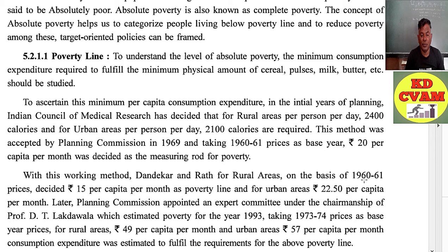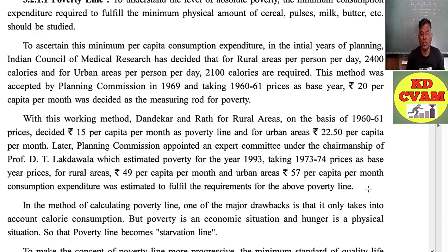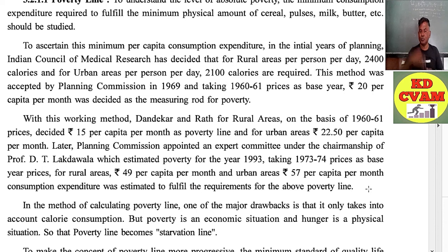Later, the Planning Commission appointed an expert committee under the chairmanship of Prof. D.T. Lakdawala, which estimated poverty for the year 1993. Taking 1973-74 prices as base year, rupees 49 per capita per month for rural areas and rupees 57 per capita per month for urban areas was estimated as the consumption expenditure required to fulfill requirements above the poverty line.